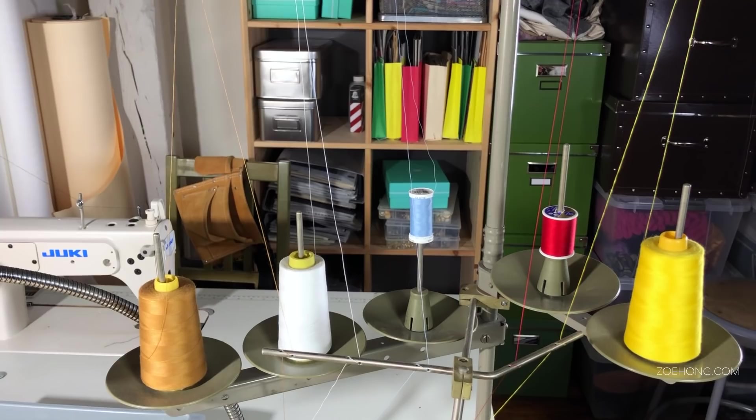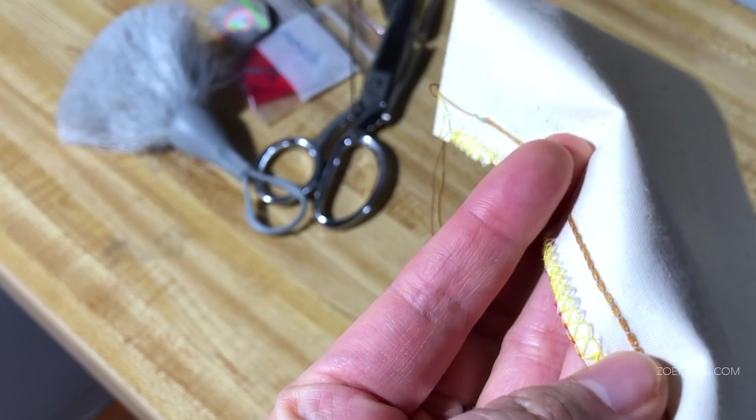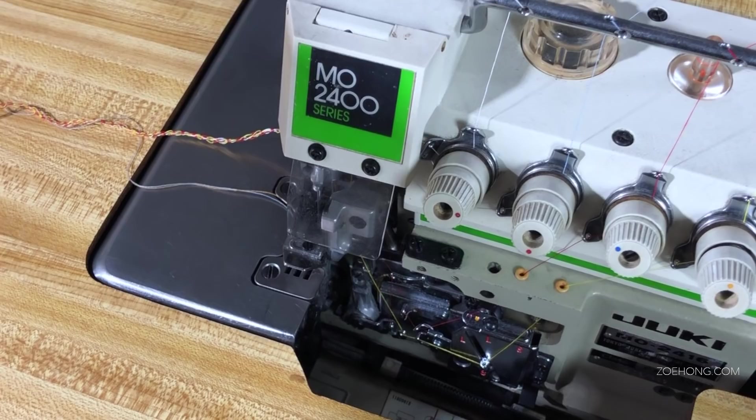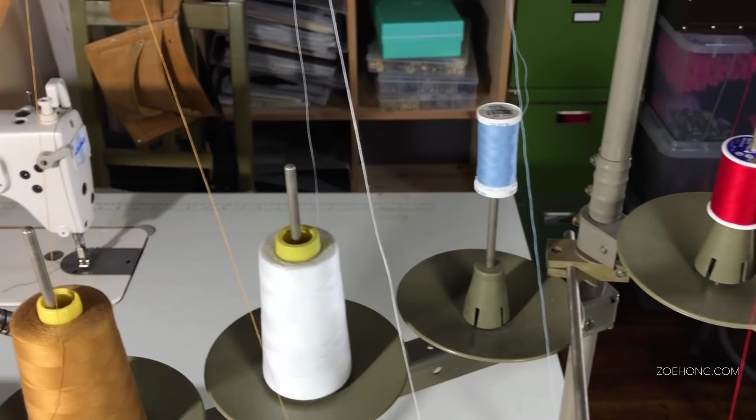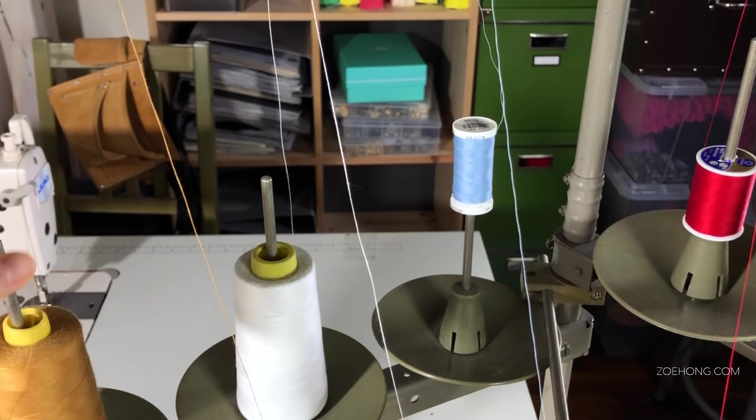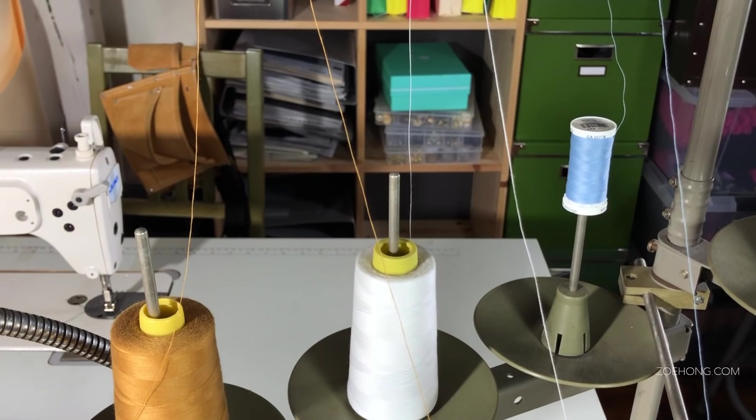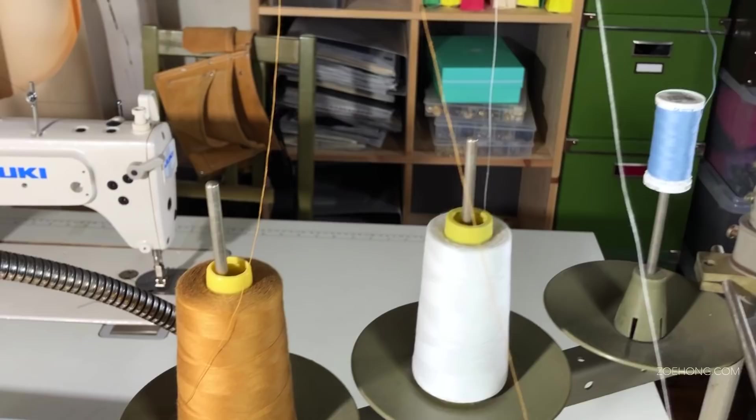So the best way to do it is to use a different color for every thread and then you can thread the machine, you can stitch it. The golden brown is the bobbin for the seam. If you have tension problems, you can tell which of these tension dials you need to fix because they're all different colors and you can match up the color. And then once that's all fixed, you can switch out the colors. You know, tie a knot to the end and then pull the knots through.